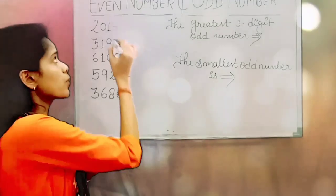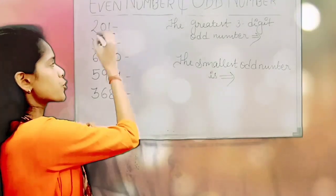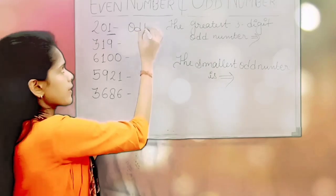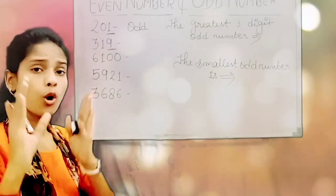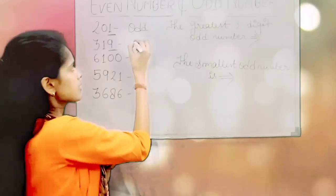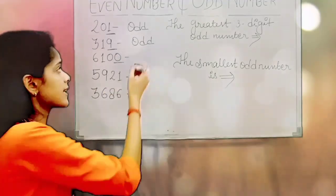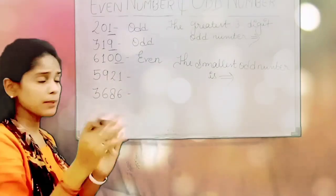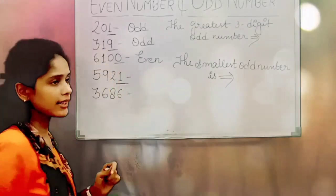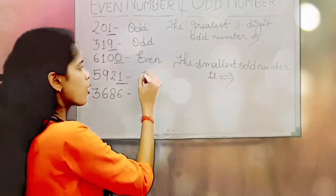Two hundred one — aap ones ki place pe dekho, ones ki place pe one rakhha hai. One is odd. So two hundred one is odd number. Three hundred ninety — ones place pe nine hai, and nine is odd number. So three hundred ninety is odd. Six thousand one hundred — ones place is zero, so it is even number. Five thousand nine hundred and twenty-one — ones ki place pe one rakha hai, and one is odd number. So five thousand nine hundred and twenty-one is odd number.